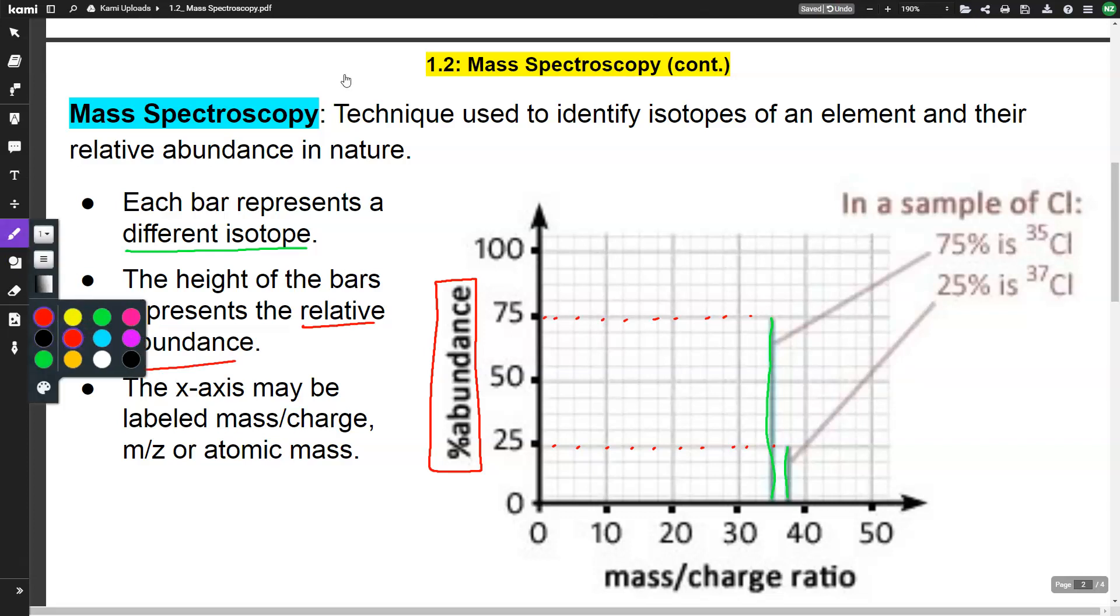Now the x-axis, if you look here, it's labeled mass-to-charge ratio, but it can be labeled a couple different things. It could be labeled mass-to-charge, it could be labeled m/z, or it could be atomic mass. Whatever it's labeled, we always want to treat it as the atomic mass.